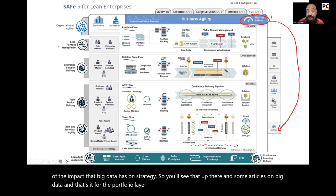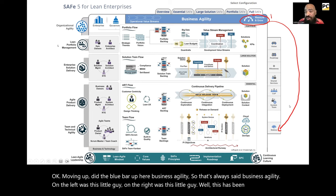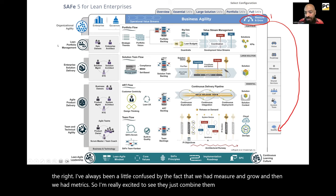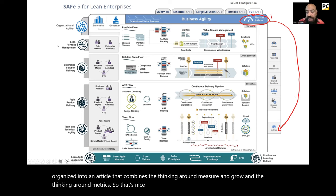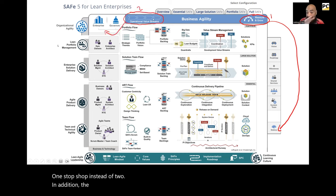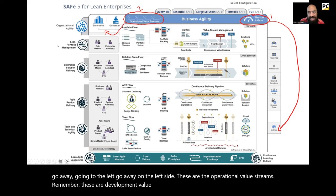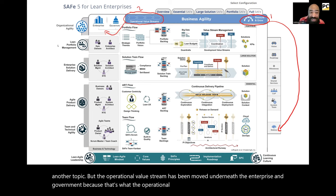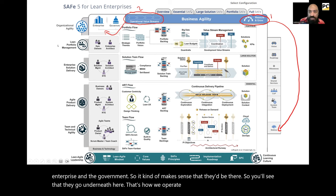Moving up to the blue bar — business agility. On the left was this little icon, on the right was this little icon. The right one has been removed. I've always been a little confused by the fact that we had 'measure and grow' and then we had 'metrics,' so I'm really excited they just combined them. Metrics will be renamed to 'measure and grow,' and anything that was in those metrics articles will be organized into a combined article. One stop shop instead of two. The operational value stream on the left has also been moved underneath 'enterprise and government,' because that's what operational value streams represent.